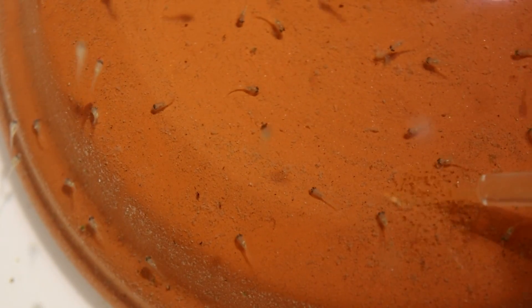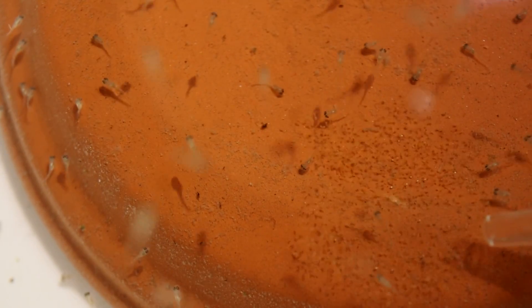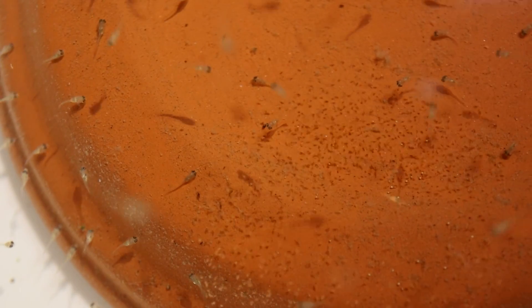It should be no secret by now just how much I depend on live foods to breed and raise fish. I use several varieties, but honestly, brine shrimp and paramecium are the only two that I would consider truly essential.